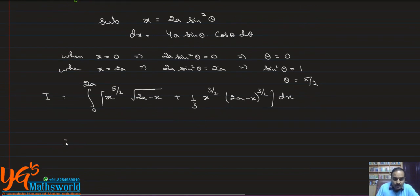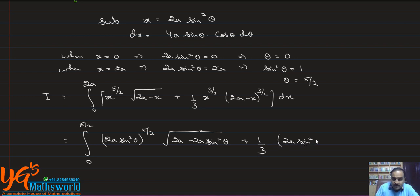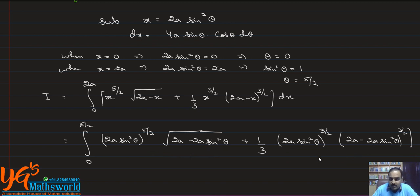Now substituting x = 2a sin²θ with limits 0 to π/2: (2a sin²θ)^(5/2) · √(2a − 2a sin²θ) + (1/3)(2a sin²θ)^(3/2) · (2a − 2a sin²θ)^(3/2), times 4a sinθ cosθ dθ.